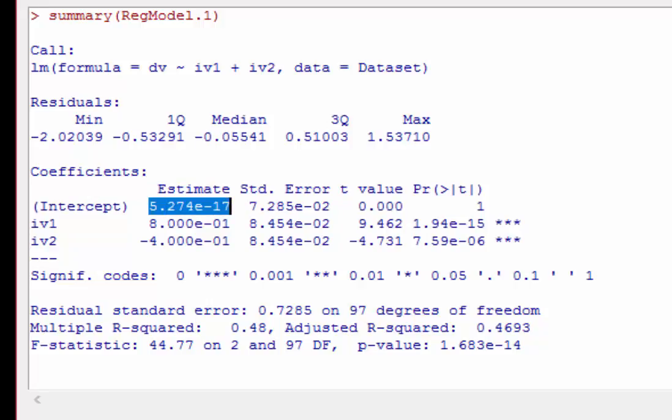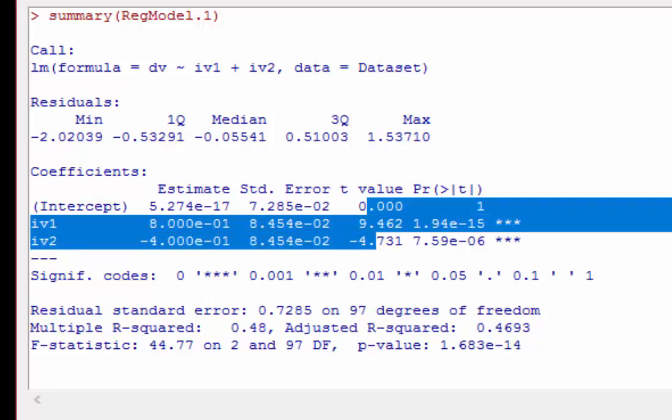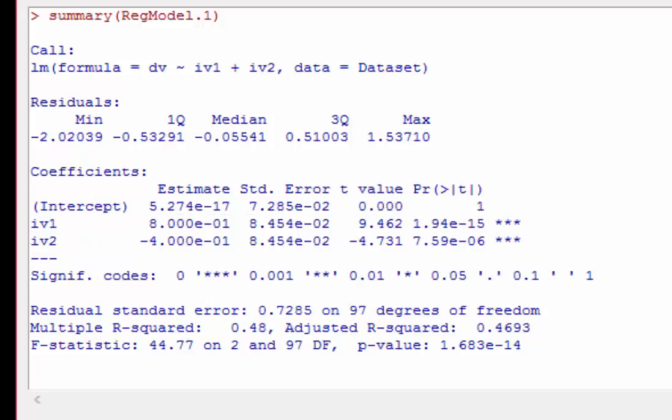So these are beta weights right here where it says estimate. You've got a beta for intercept which you'll just ignore, you'll have your first predictor, you'll have your second predictor, so on and so forth. You'll have your standard error, you'll have a t value and then an associated p value. Again, it's reporting these in scientific notation, so make sure that you change those and that if they're really really teeny tiny reported as less than .001.